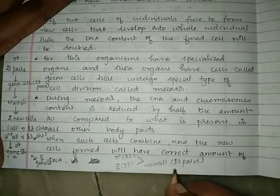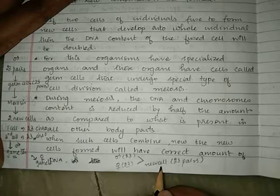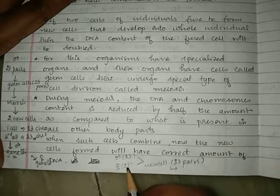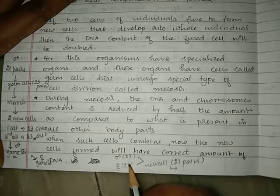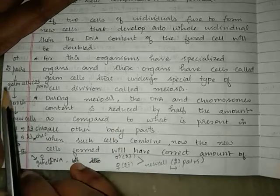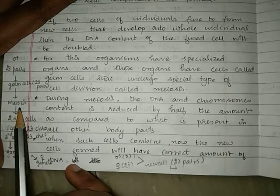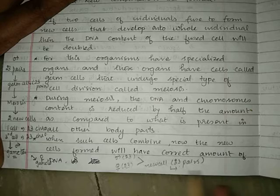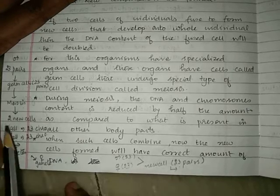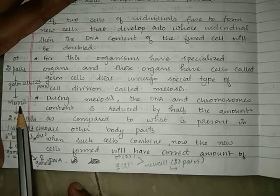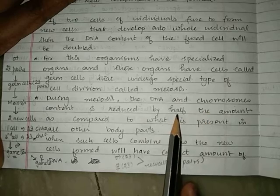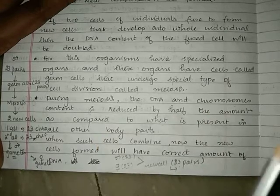The new cell formed can grow into a complete organism. The chromosome number problem is solved by the meiosis process. Meiosis helps in reducing the DNA and chromosome content by half the amount compared to other body parts.